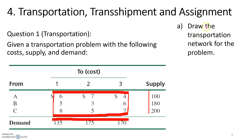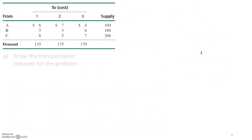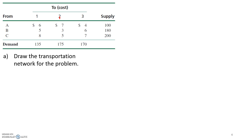The first question is to draw the transportation network for the problem, and the second question is to formulate the transportation model. A transportation network is made up of two parts: nodes, which are represented by circles and represent the sources and destinations, and arcs or lines which represent a path between two nodes.